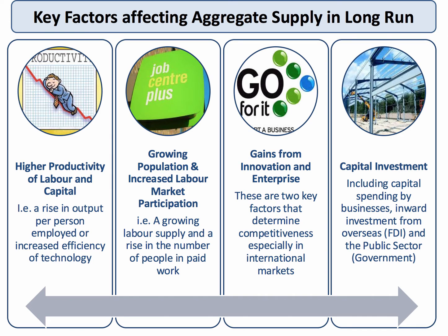Population growth is a key part of long-run aggregate supply, which essentially represents the productive capabilities, the capacity, and the potential of an economic system. Long-run aggregate supply is driven by high productivity, a growing population, and increased participation of that population. It comes from the dynamic gains of innovation and enterprise, and it is also increased when there's a significant increase in net capital investment.